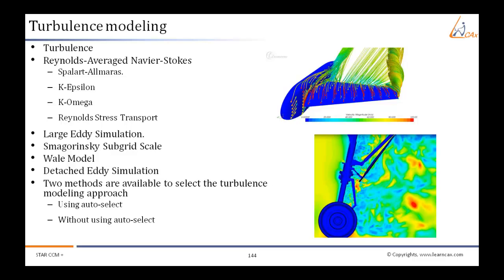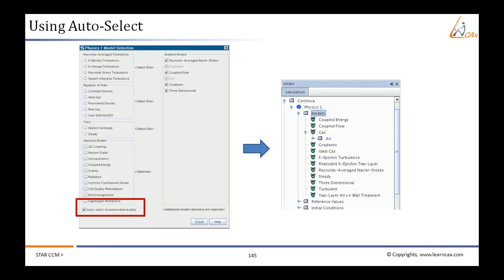Two methods are available to select the turbulence modeling approach: using auto-select or without using auto-select. Here we will see how to use auto-select. This is the default mode of selection and is indicated by the auto-select recommended physics models checkbox being ticked. The selection of the turbulent radio button in the viscous regime group box will automatically select turbulence models that provide closure of the Reynolds Averaged Navier-Stokes or RANS equations as a turbulence modeling approach.